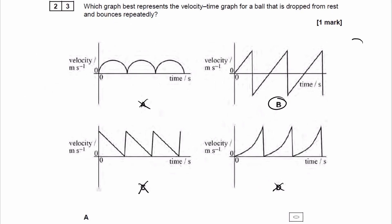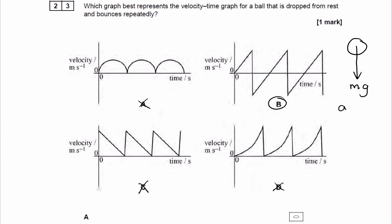Let's consider the forces acting on a ball. The only force is weight, if we ignore air resistance. So whether the ball is moving upwards or downwards — either stage of its bounce — the only force acting upon it is going to be weight when it's just in the air. In those scenarios, when you have an object that's only experiencing weight, it's in freefall, and in that case the acceleration will just be 9.81 downwards.